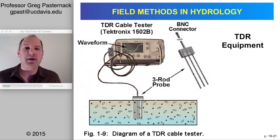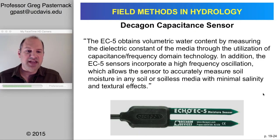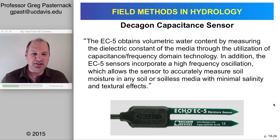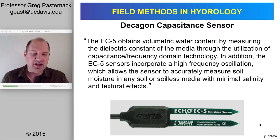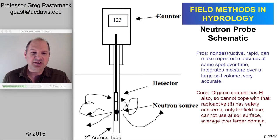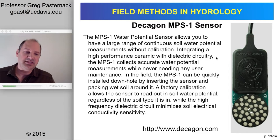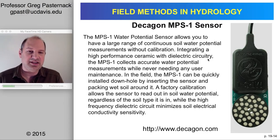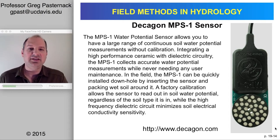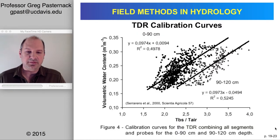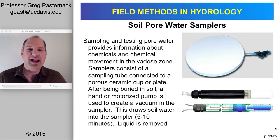Multiple TDR devices are available from several companies and are not particularly expensive per sensor. One example is the Decagon EC5 capacitance sensor, which uses dielectric constant measurement. There's also the Decagon MP1 sensor, which similarly uses dielectric properties but is oriented toward measuring matric potential. This illustrates the broad potential of dielectric constant measurement to characterize soil water properties.